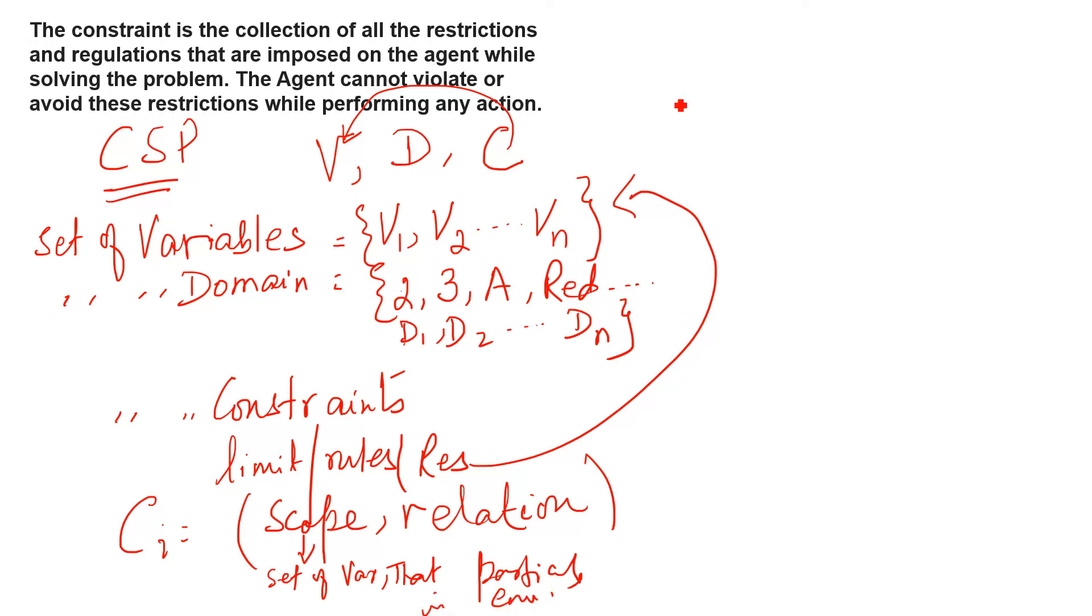Scope means set of variables that participate in this constraint. Suppose, here I say that my x1 and x2, these are my two variables. These are participating or these two are given in the question. That is called the scope. What is the meaning of relation? Relation means the values that the variable has. Suppose, I say this is called the domain also. If I will say 1 for x and 2 for this x2. What is the relation? And the constraint relation is that x1 cannot be equal to x2. This is the important thing. When I will solve, I will show you the example in my next lesson as well.